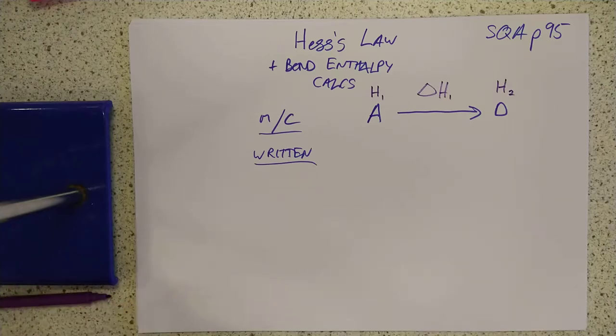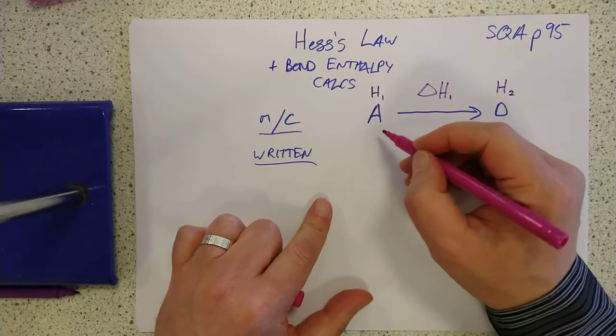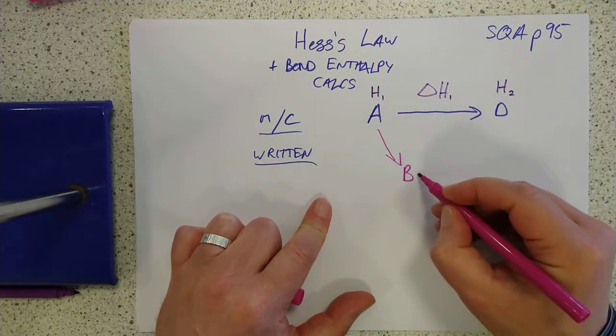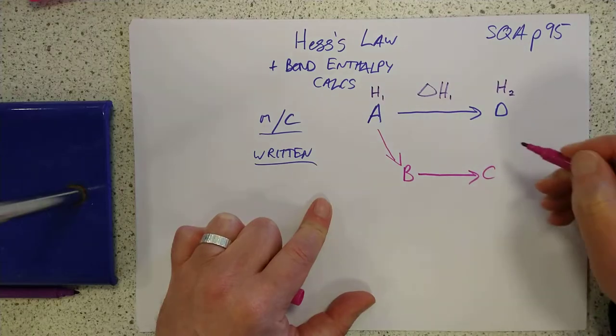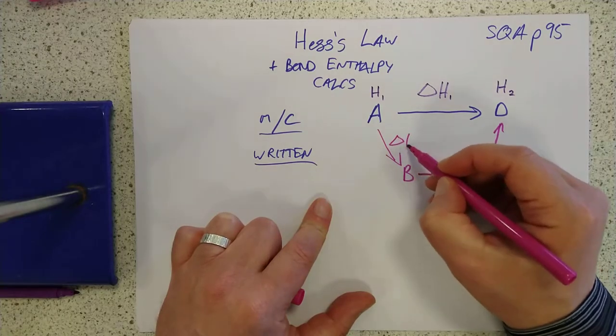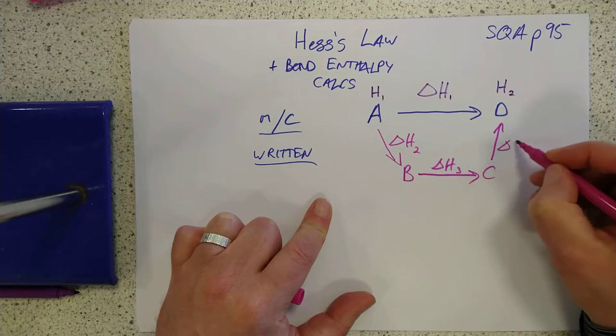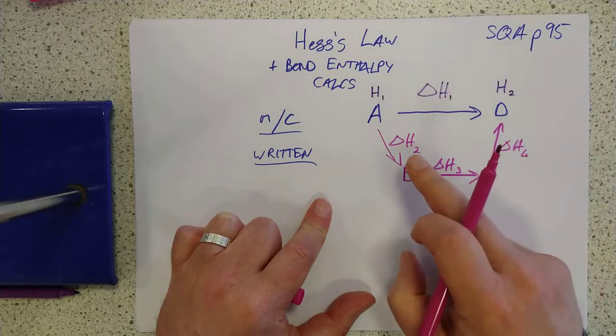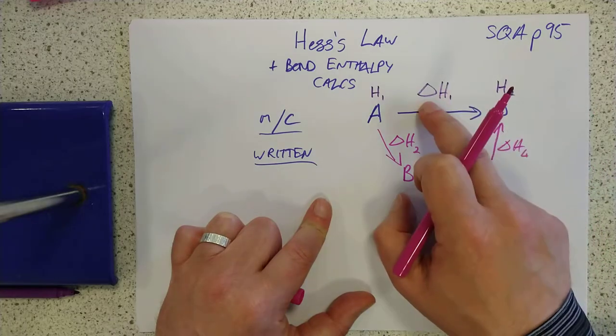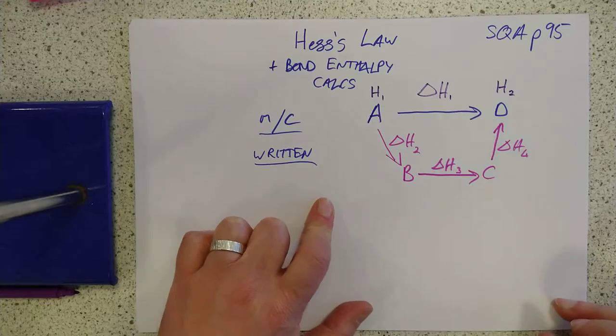But Hess said that you don't have to go straight from there to there. You could go round the houses, as it were. You could make chemical B, then turn chemical B into chemical C, and then turn C into D. These will all have their own individual little delta H's, of course. But this plus this plus this must logically still be the same as this, because you're still going from these bonds to these bonds. It does make perfect sense, after all.